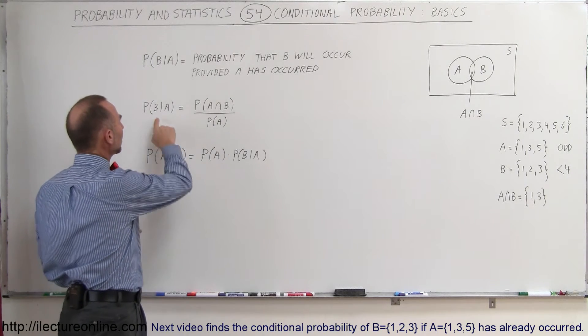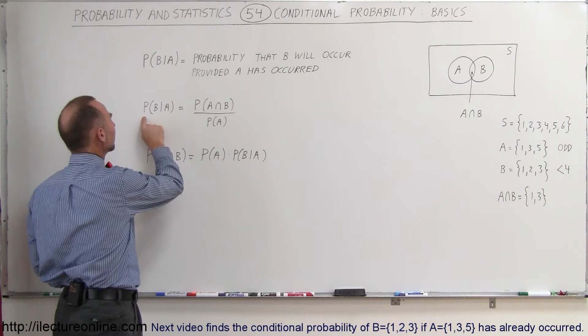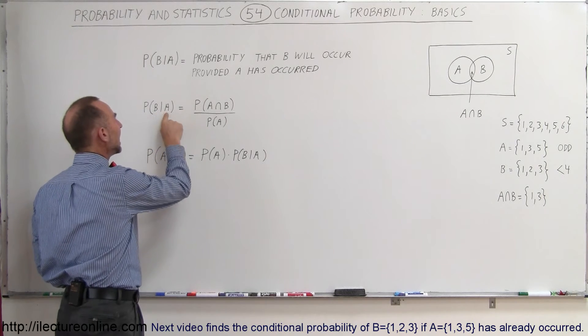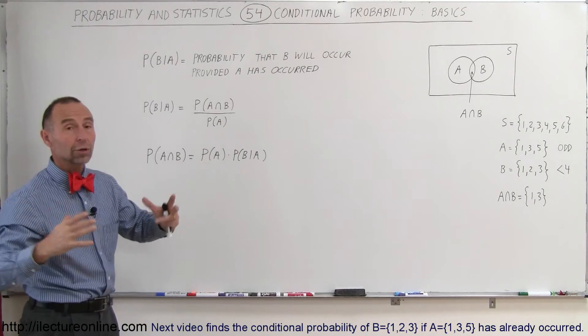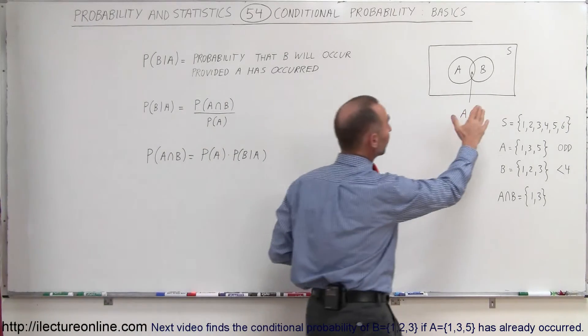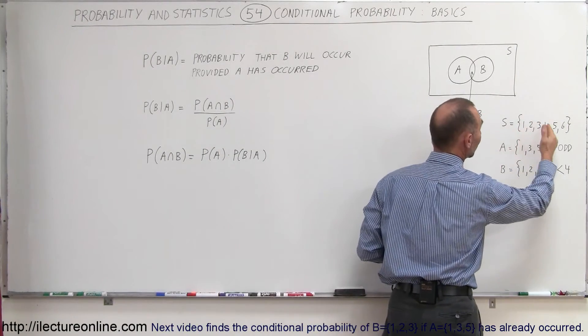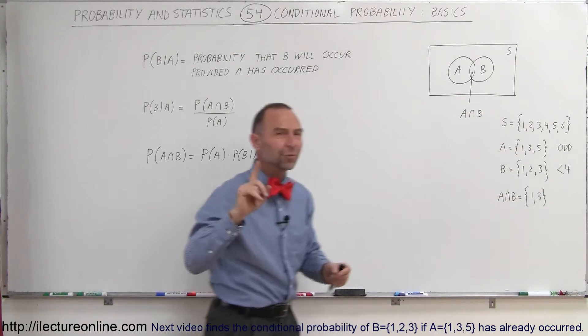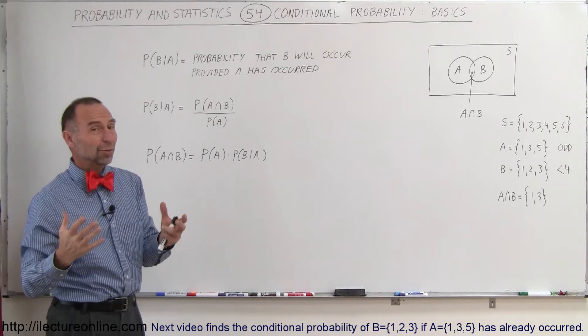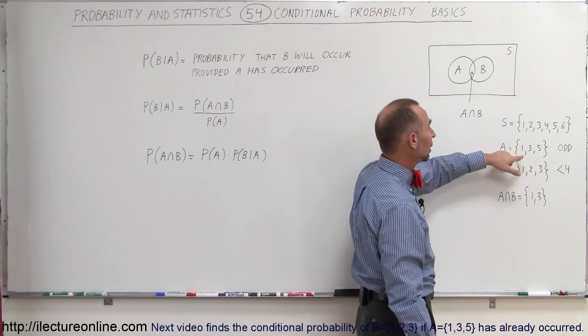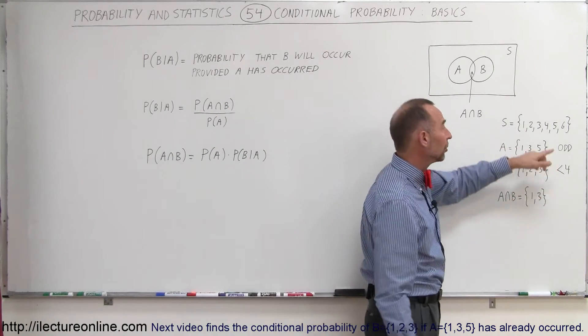Let's look at this again. The probability that B will occur provided that A has occurred. Well, if A has occurred, the whole sample space is no longer probability. Remember, the whole sample space is the numbers 1, 2, 3, 4, 5, and 6. But if we now have the knowledge that A has occurred, that means some of the numbers can no longer be possible. If A has occurred, then only 1, 3, and 5 are possible.